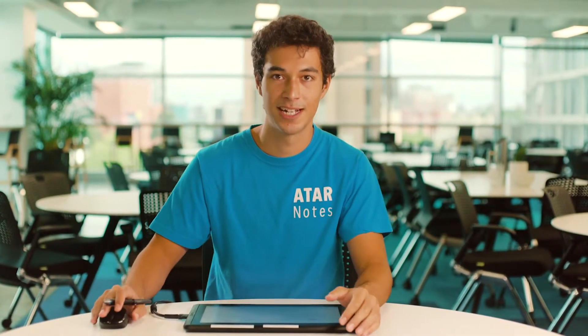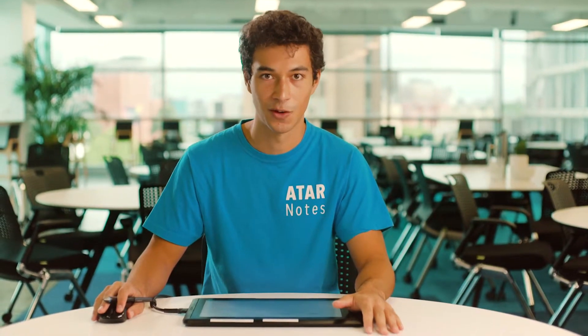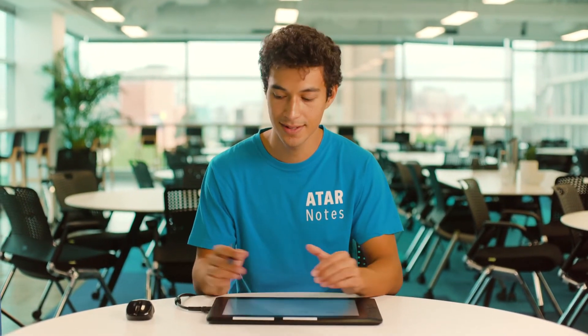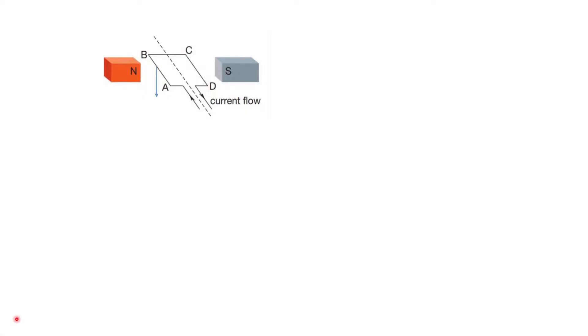One way we could try it is by setting up an arrangement that looks something like this. I have a current-carrying coil placed right inside a magnetic field. In this coil, there are two sides carrying current directly perpendicular to a magnetic field, so those two sides are going to experience a magnetic force. Using the right-hand slap rule, side AB experiences a magnetic force downwards, and side CD experiences a magnetic force upwards. These two forces create a torque on the coil, which causes it to spin.